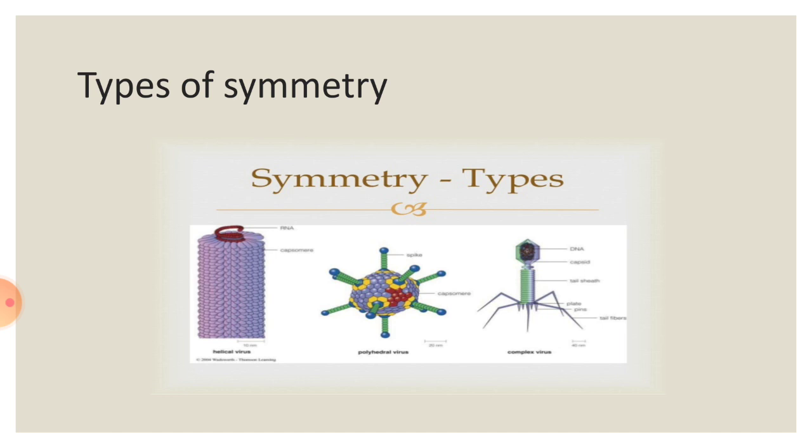They are helical symmetry, cubical or cuboidal symmetry or icosahedral symmetry - all are one and the same - and binary symmetry. As you see in the slide, the first figure represents helical symmetry. The best example is Tobacco Mosaic Virus. Here in the capsid region, the capsomeres are arranged in a helical manner. If you observe the middle diagram, that represents cubical or cuboidal or icosahedral symmetry. The shape is like a cube. It is with 20 faces. Each face is like a triangle. And the third type is binary symmetry. It is a combination of both helical and icosahedral or cuboidal symmetry. The head is like a cube, whereas the tail is helical.